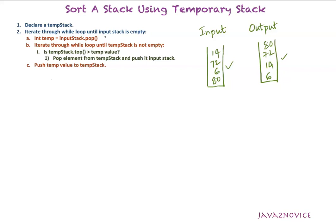Now the approach we are going to follow is written here. First, declare a temporary stack and then create a while loop. Iterate through the while loop until the input stack is empty. Inside this while loop, the first step is to pop out an element from the input stack and declare a temporary variable assigned to the popped element. As a second step, use a while loop and iterate until the temporary stack is not empty.